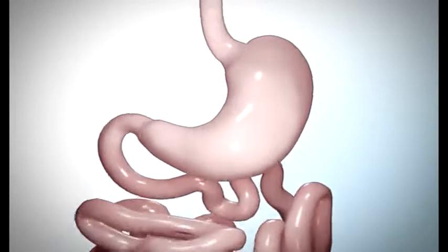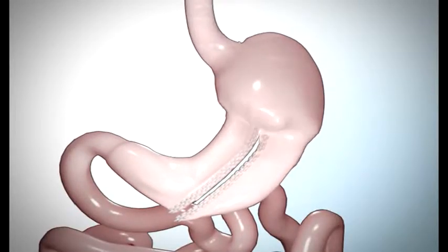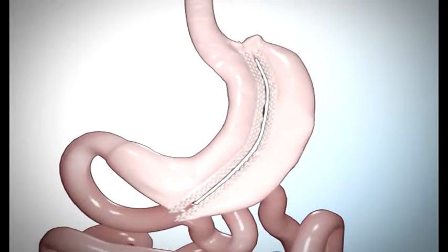The second step is dividing your stomach into two sections. Your surgeon will divide your stomach using an endoscopic stapler. Your surgeon may also use traditional stitches or a combination of both staples and stitches to seal each section of your stomach. This seal is called the suture line.